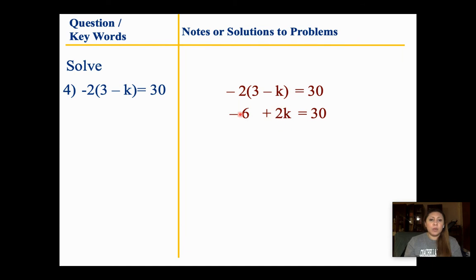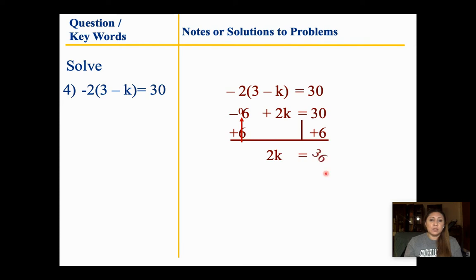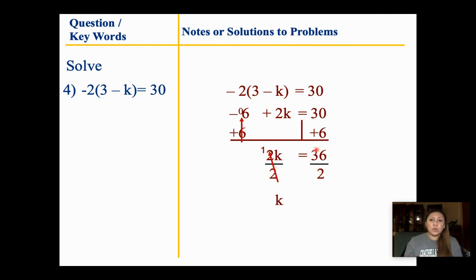Here is my variable. I have a negative 6 as my constant, so I move that piece by adding 6 to both sides. Negative 6 plus 6 cancels out to 0. My 2k comes down, equals 30 plus 6, which gives me 36. I have a 2 as my coefficient, so I divide both sides by 2. My 2s go away, leaving just k. 2 goes into 36 eighteen times. So my answer is k equals 18.